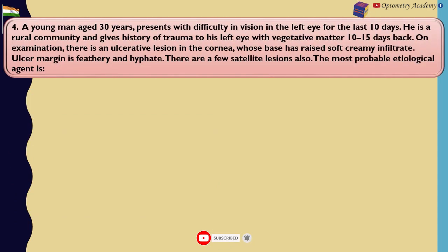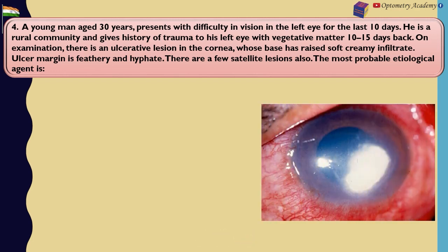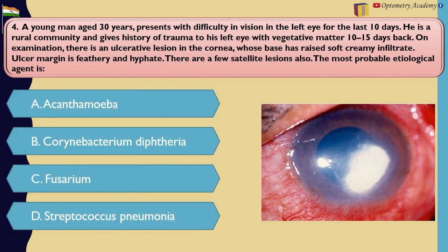A young man aged 30 years presents with difficulty in vision in the left eye for the last 10 days. He is from a rural community and gives a history of trauma to his left eye with vegetative matter 10 to 15 days back. On examination, there is an ulcerative lesion in the cornea whose base has raised soft creamy infiltrate. Ulcer margin has feathery and hyphate borders. There are a few satellite lesions also. The most probable etiological agent is: A. Acanthamoeba. B. Corynebacterium diphtheriae. C. Fusarium. D. Streptococcus pneumoniae.